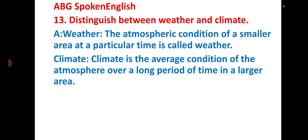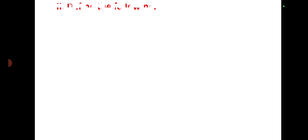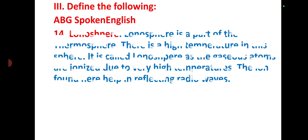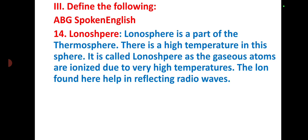Define the following. Ionosphere: Ionosphere is a part of the thermosphere. There is a high temperature in this sphere. It is called ionosphere as the gaseous atoms are ionized due to very high temperatures. The ions found here help in reflecting radio waves.